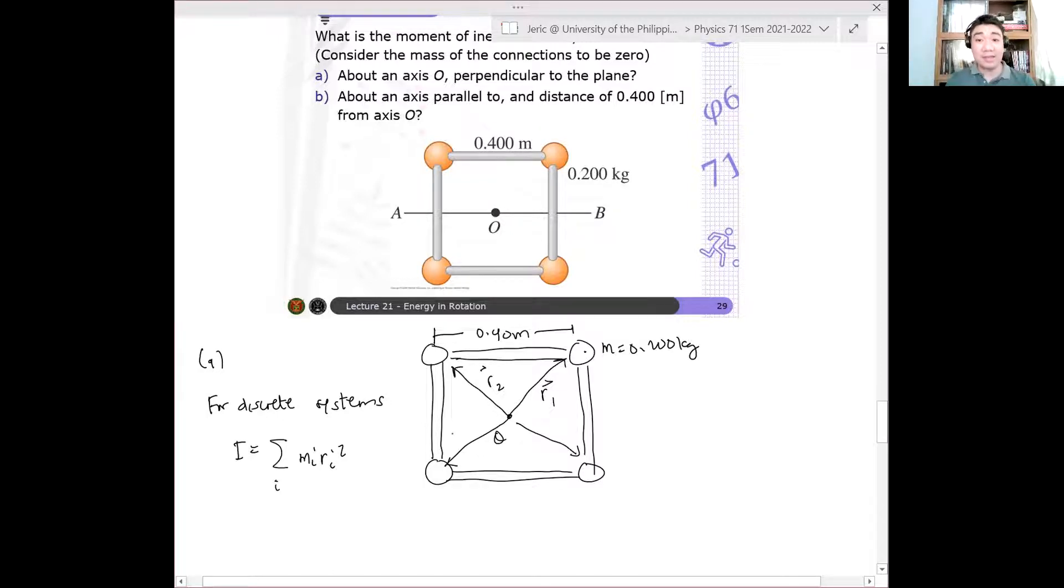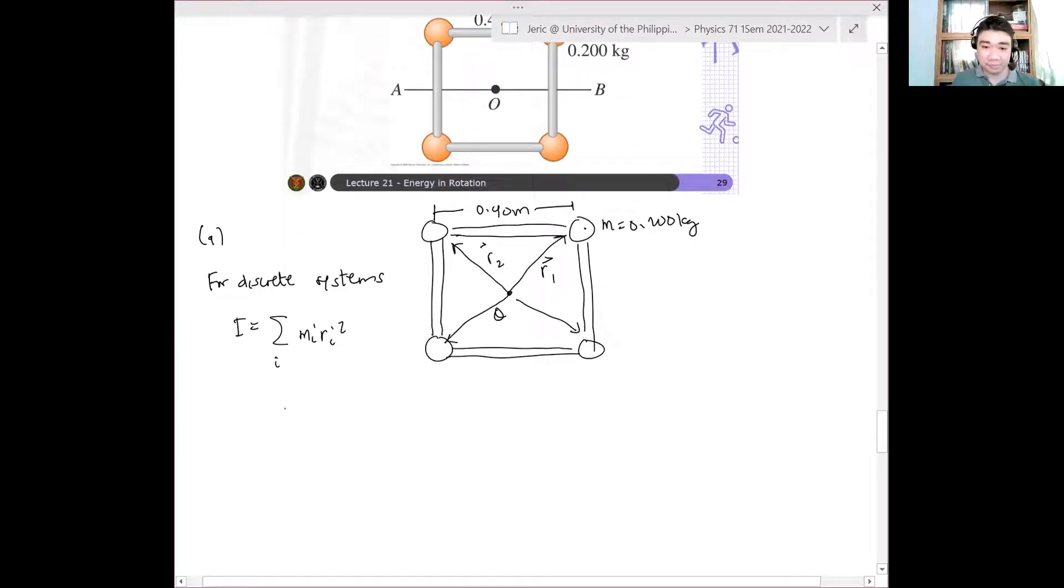Now, pansinin ninyo, identical naman yung masses. And this is a square, therefore the diagonals are equal. And therefore the half diagonals are also equal. Hence, we are expecting by symmetry, na kailangan ko lang calculate yung isa, then I'll just multiply it by four. So this is simply I equals 4MR squared, where M is the mass of one of the point masses, and R is the distance of that point mass from the axis of rotation O.